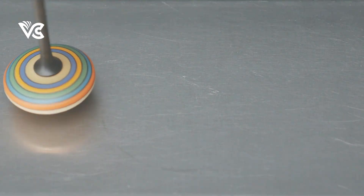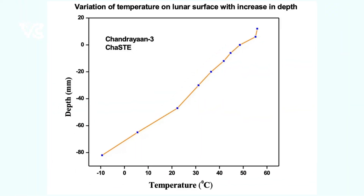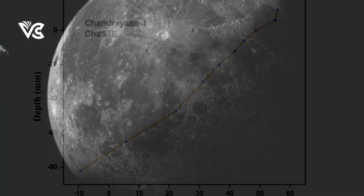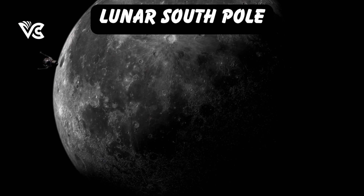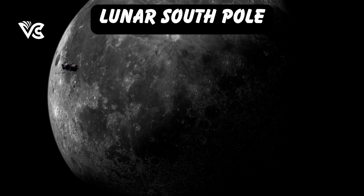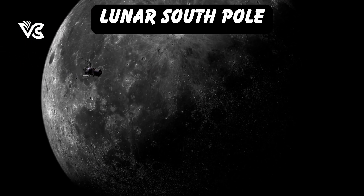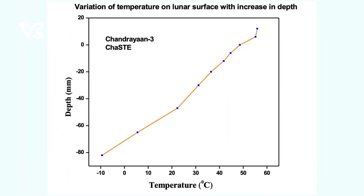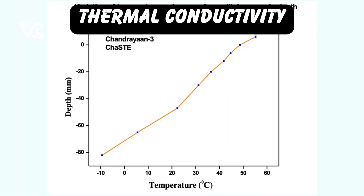The presented graph illustrates the temperature variations of the lunar near-surface at various depths, as recorded during the probe's penetration. This is the first such profile for the lunar south pole. It's a straightforward plot. This graph will give us the details about the thermal conductivity of the lunar surface at narrow depth.